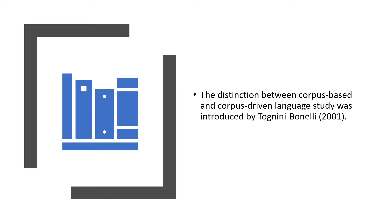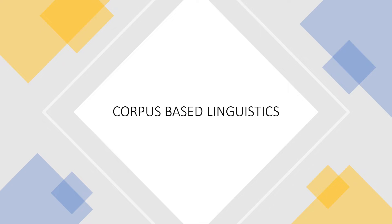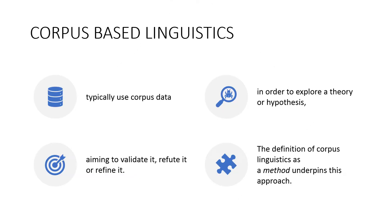Now, we will observe in detail what was discussed, but in a separate, distinct manner — not as a paragraph — to make it easier to understand. Let's look at corpus-based linguistics and its key characteristics. Corpus-based linguistics typically uses data from a corpus. This data is used to explore a theory or a hypothesis, aiming to validate it, refute it, or refine it. The definition of corpus linguistics as a method underpins this approach. These are the four key characteristic features of corpus-based linguistics.